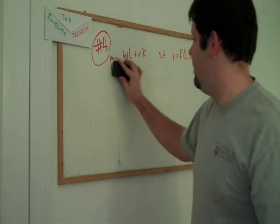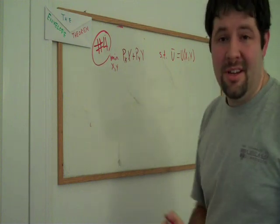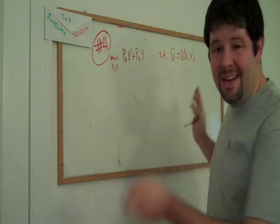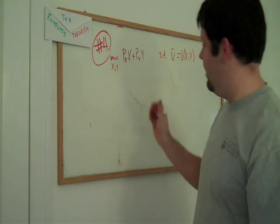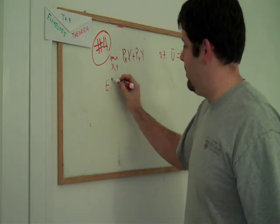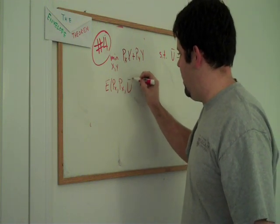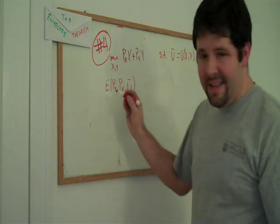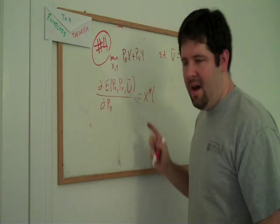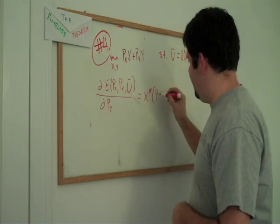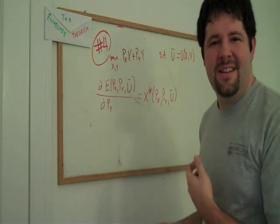Another thing that you can do is we can consider a Hicksian problem. It's exactly the cost minimization that the firm has. It's mathematically identical. And so if we took the derivative of that minimized objective function. Let's call that the expenditure function. It's going to be the minimized expenditure function to attain a given level of utility. We take the derivative of that just by an analog to Shepard's Lemma. We will get the demand curve from that problem. And that's the Hicksian demand.